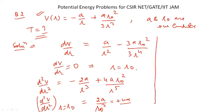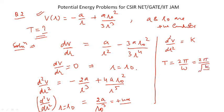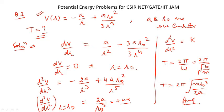We write d²V/dr² = k (a constant). The time period is T = 2π/ω, where ω = √(k/m). Substituting, we get T = 2π√(r₀³/(2a)). This is the answer to this important problem.